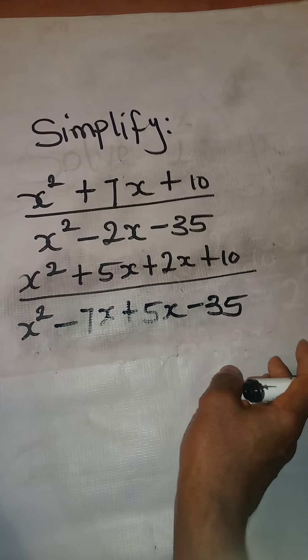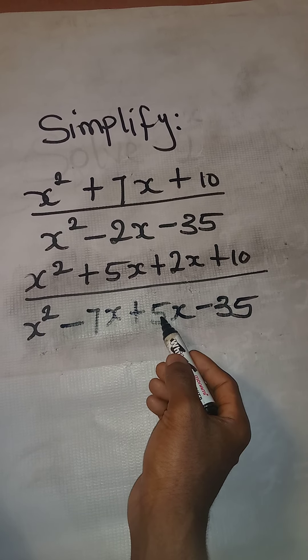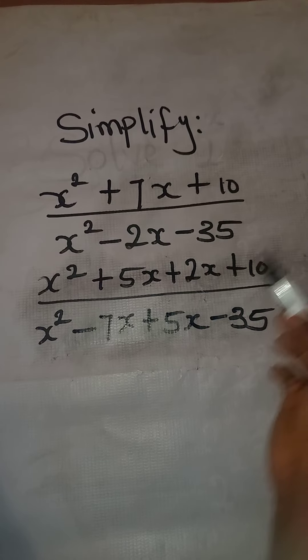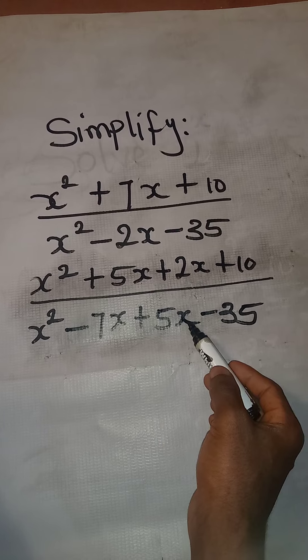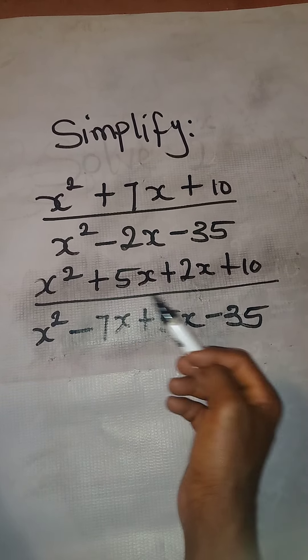Let me explain this again. Minus 7 times 5 will give us this minus 35. And then minus 7x plus 5x will give us this minus 2x. And that is settled.